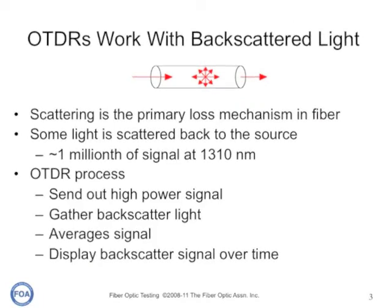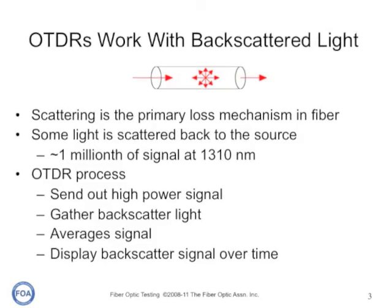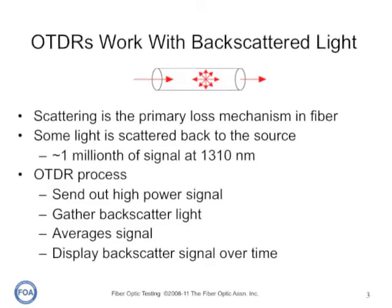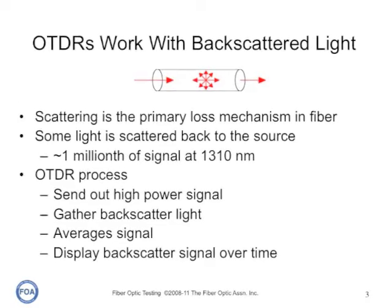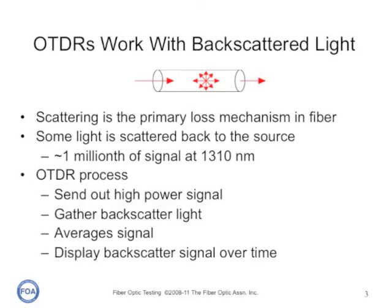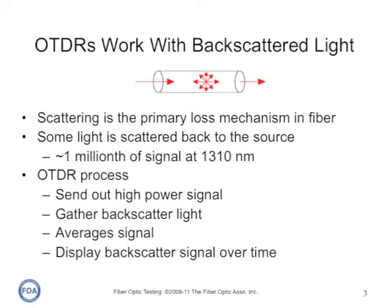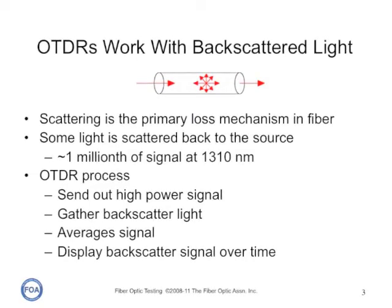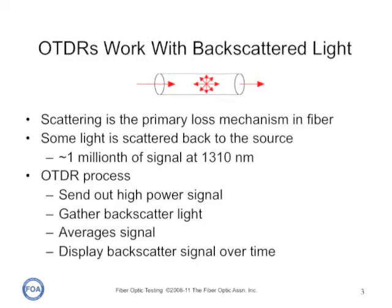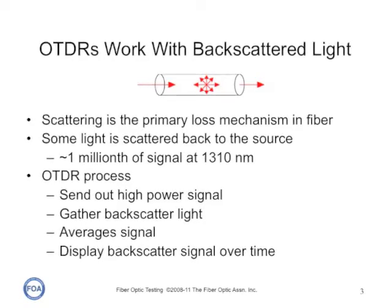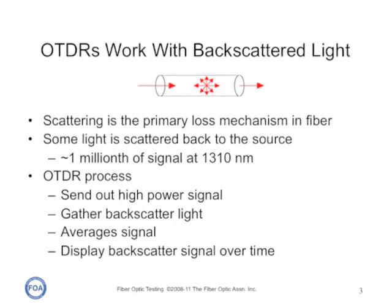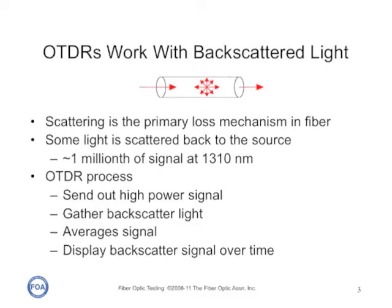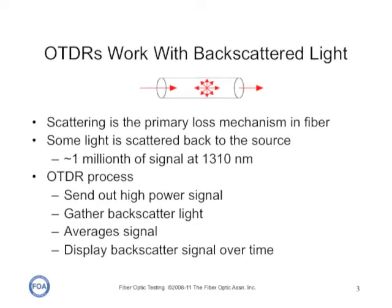OTDRs work with backscattered light. Scattering is the primary loss mechanism in fiber, and a small amount of the light, about a part per million at 1300 nanometers, is reflected back up toward the OTDR itself. The OTDR sends out a very high powered light pulse down the fiber, gathers the backscattered light, averages it to reduce the signal to noise, and processes it over time to display the backscatter as what we call a trace or signature of the fiber optic cable plant being tested.